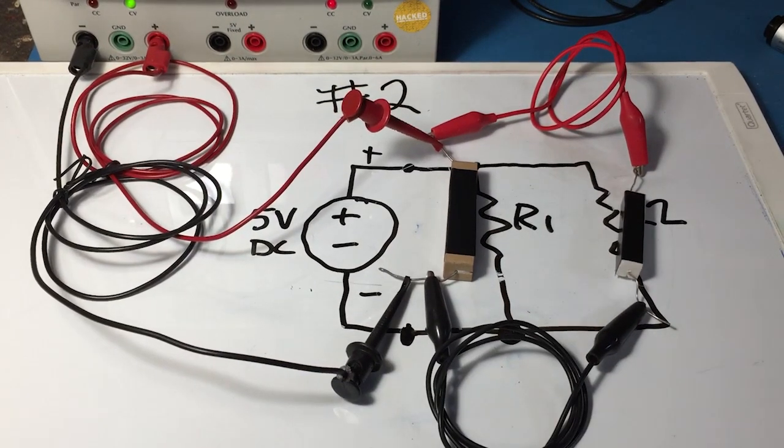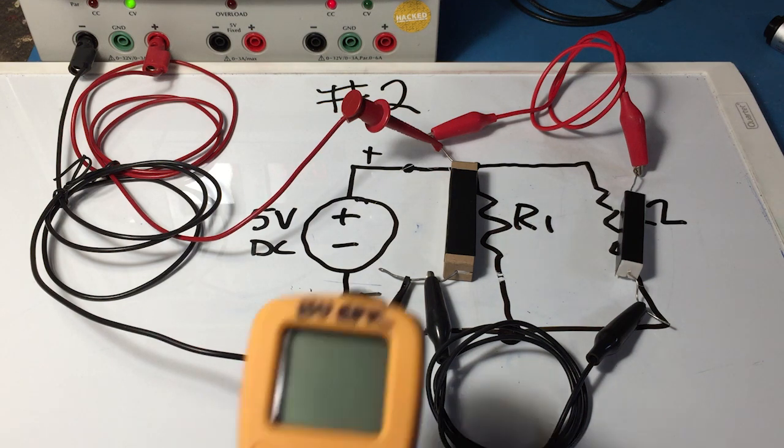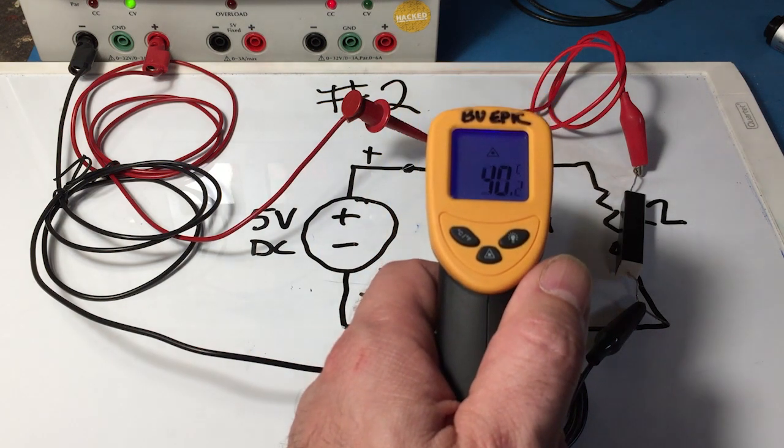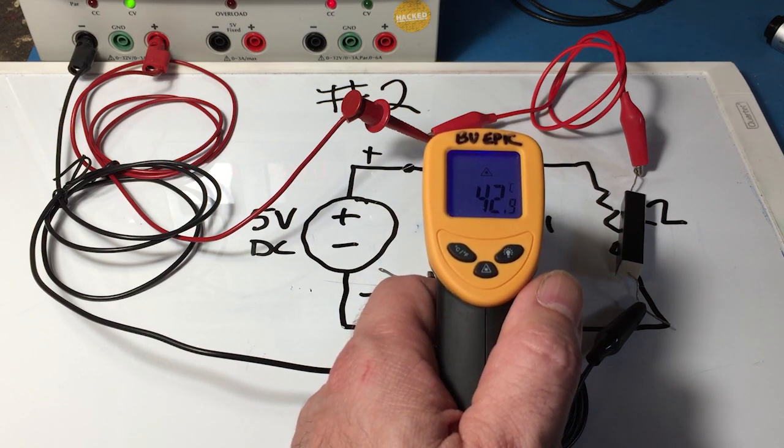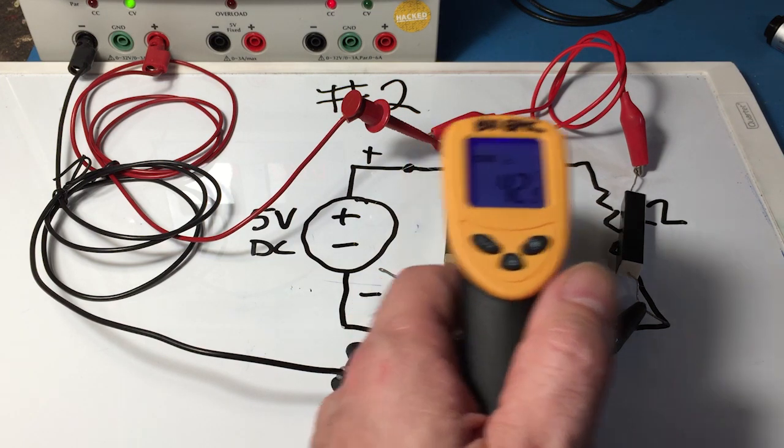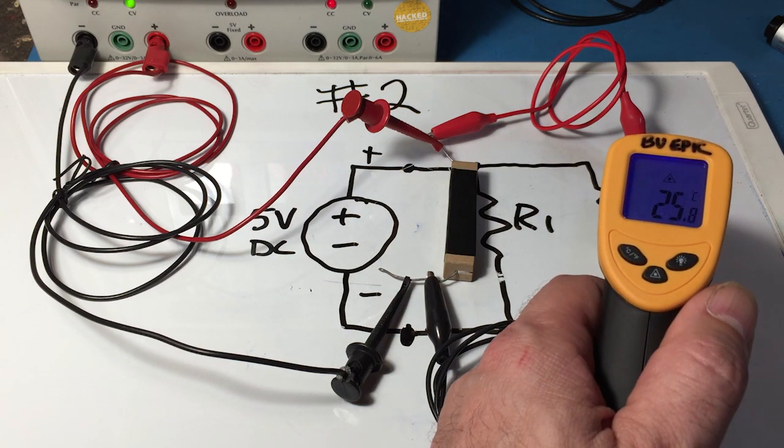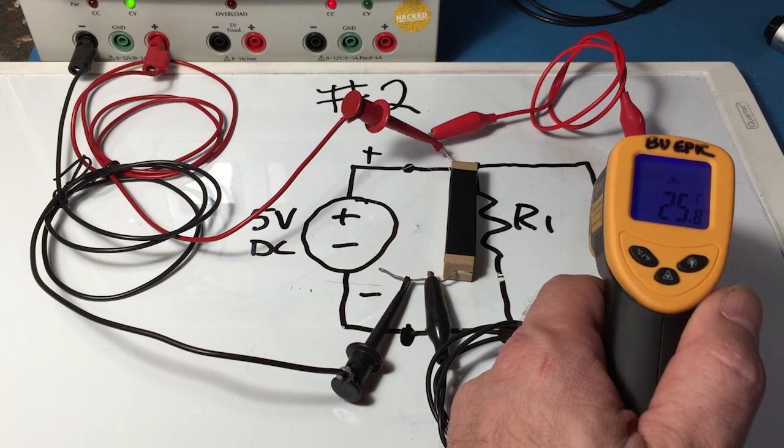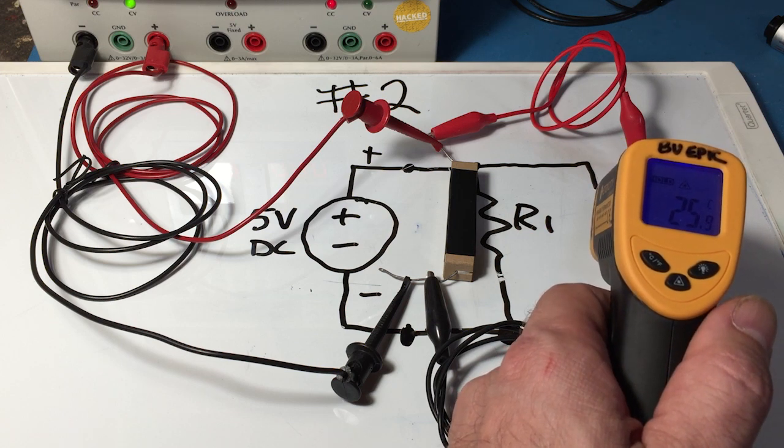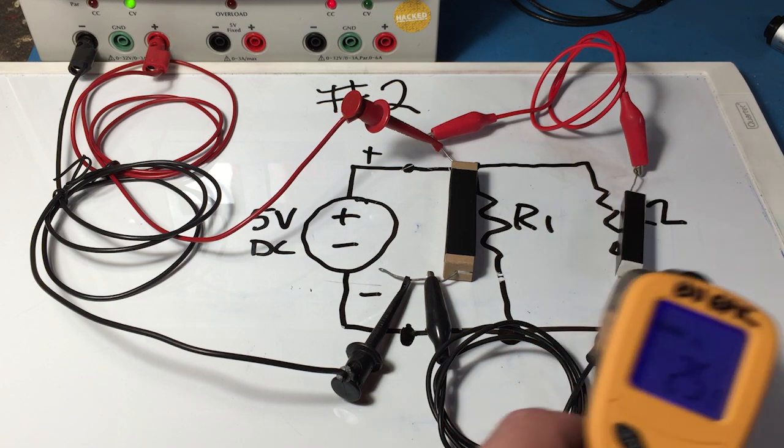Now if we look back at the circuit, things have been running for a little while now, hopefully stabilizing. Can you measure the temperature of the resistors? So I'm getting about 42 degrees Celsius on R1. And about 25 degrees or 25.9 degrees Celsius on R2.